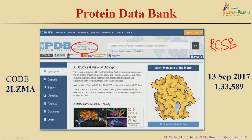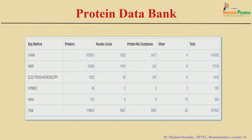Using the search option, if you want a specific protein — for example, the code for lysozyme is 2LZM — you can enter 2LZM in the search option. Looking at the statistics of the protein data bank, X-ray crystallography is the most prominent technique. Among about 127,000 structures, about 114,000 are obtained from X-ray crystallography.